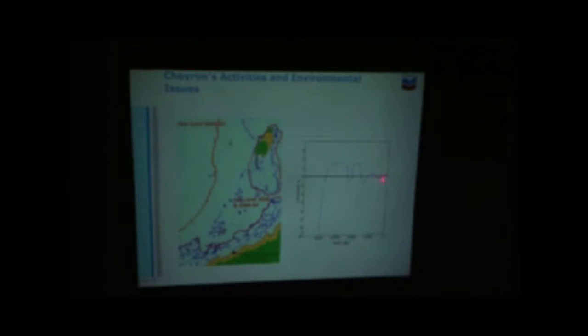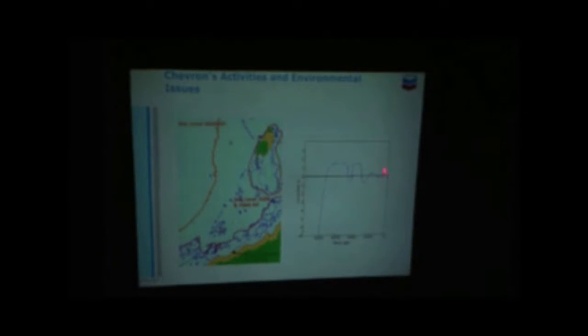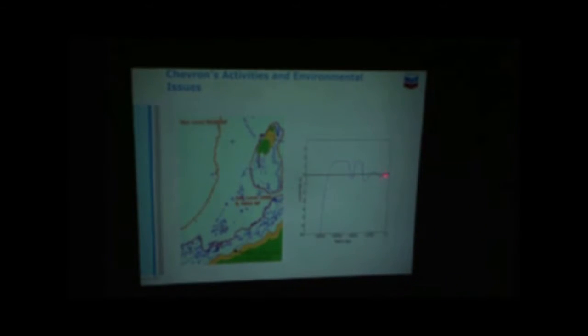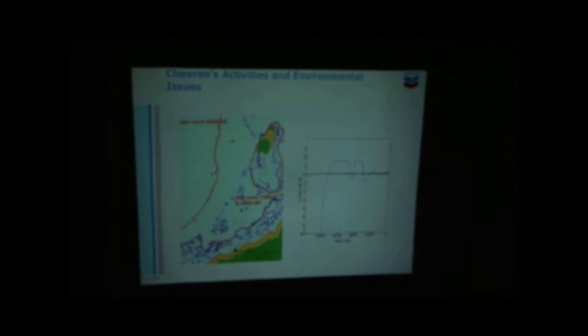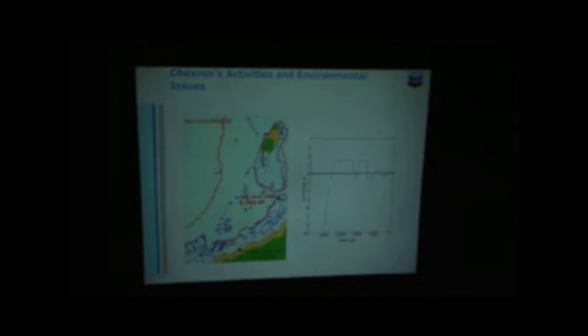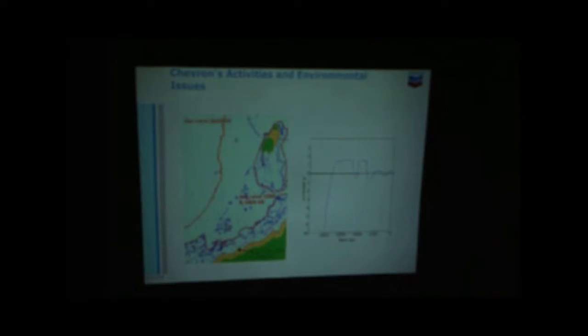And then finally it tailed off to where it is today, though in fact the graph isn't quite right because it's actually going up. Sea level at the moment is rising on Barrow Island at around about 10 centimetres in 10 years - about a centimetre a year. Not much, is it? But when you've been there 40 years, you can see 40 centimetres difference in sea level.